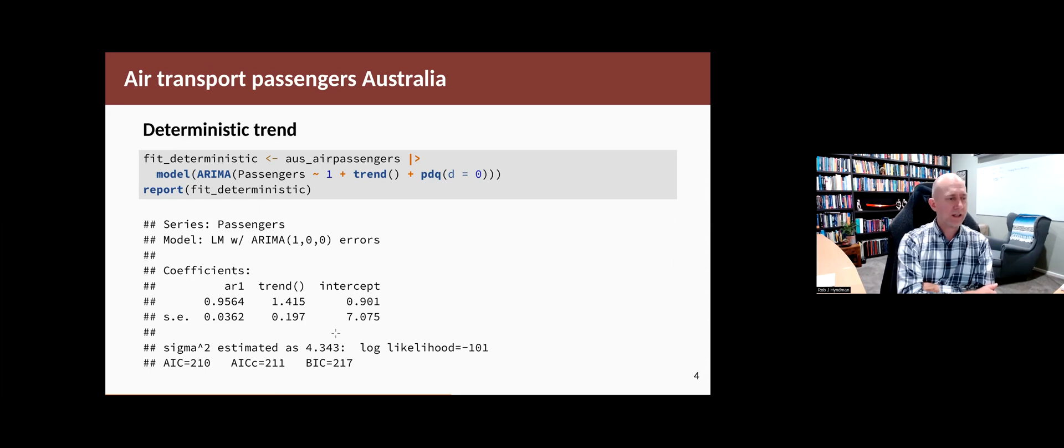If we fit a linear trend to this, which is deterministic, we just have to specify that we want a trend function where little d equals zero to force the error term to be stationary. And this part here models the trend. It's a constant plus the slope parameter. If we look at the result, we get this output. It's a linear model with an ARIMA(1,0,0) error. The one here has been chosen automatically.